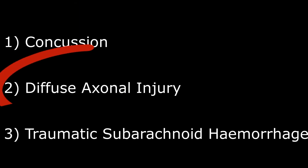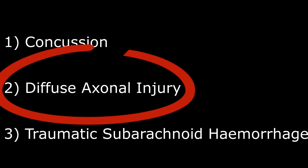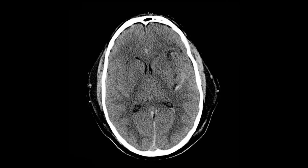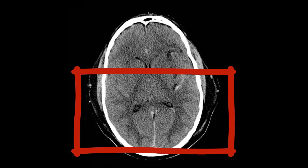Then you have diffuse axonal injury. It is due to a stretching force on the neurons that leads to tearing and damage. This can result in multiple foci of micro-hemorrhages, which, as you can see here, are spreading into the gyri.